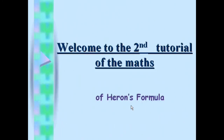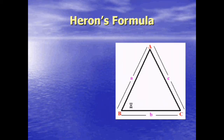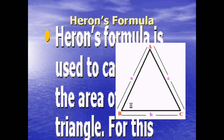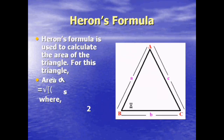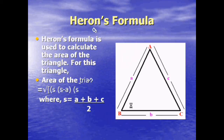Welcome to the second tutorial of the maths proof of Heron's formula. In this tutorial we will prove Heron's formula. Heron gave a formula to find out the area of a triangle. Heron's formula is used to calculate the area of the triangle. The area of the triangle is equal to A = √(s(s−a)(s−b)(s−c)), where s = (a + b + c) / 2.